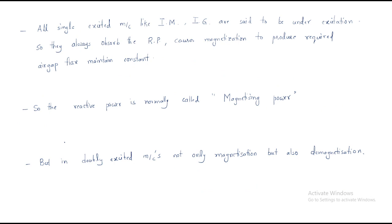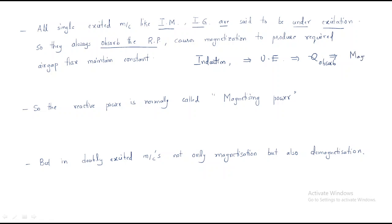When air gap flux is maintained constant, the system works properly; otherwise it doesn't. All singly-excited machines like induction motors and induction generators are said to be under-excited. So induction motors and induction generators are called under-excited machines. Whenever in an under-excited condition, the machine always absorbs reactive power. This absorbed reactive power causes magnetization — it takes the flux.